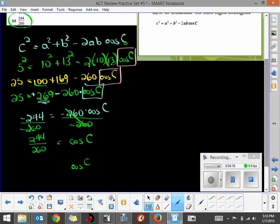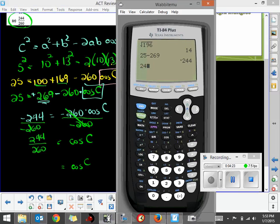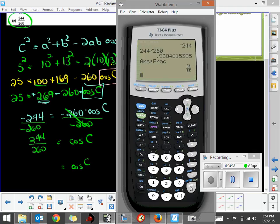I wouldn't doubt that many times they're going to take this and put it in lowest terms, so the cosine of C would equal, and if you want to do a quick reduction of that, you can take 244 divided by 260 and utilize the features of your calculator. You can change that number to a fraction, and you'll get 61 65ths in lowest terms.